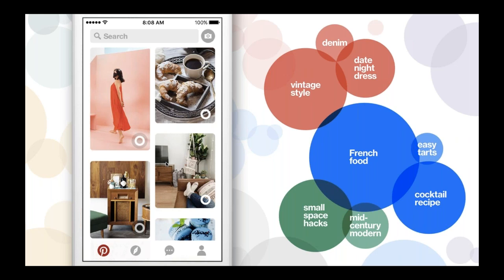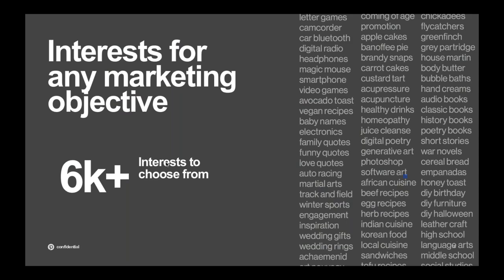Some people may not know that this is the same set of technologies we're using outside of ads — it's how we surface magical ideas to every pinner, what powers our incredible core personalization, and it's now available for you to access as marketers. Today you can reach pinners who are looking for ideas, products, or services like those your business offers. Whether your marketing goals are reach, awareness, consideration, sales, or something else, interests can help you narrow your audience. With over 6,000 interests to choose from today — and more on the way — there are interests available to meet your needs.